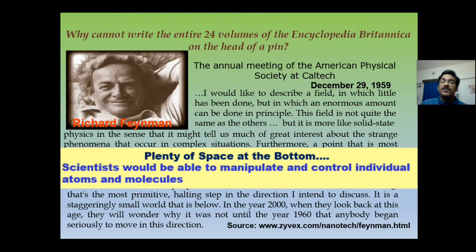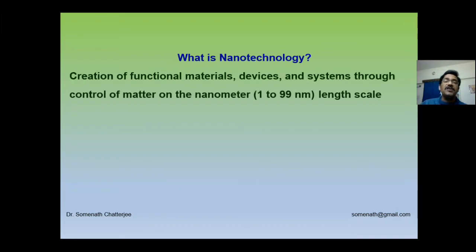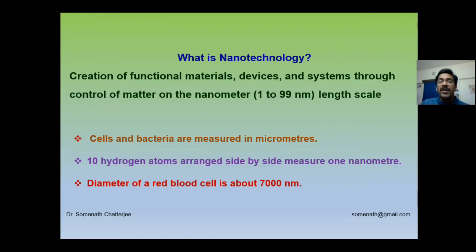So what is nanotechnology? Nanotechnology is basically the creation of functional materials, devices, and systems below 100 nanometers at the length scale. To understand the nanometer region, consider that 10 hydrogen atoms arranged side by side give you one nanometer. You can appreciate just how small nano really is.